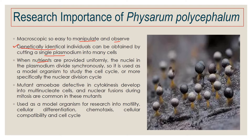As Physarum polycephalum obtains nutrition, it divides repeatedly, and the division rate increases when there is a good amount of nutrition in the media. For this reason, this organism can be used to study the cell cycle as well as the nuclear division cycle. If we want to induce mutations, it is also very good for mutational studies. Apart from that, it can be used as a model organism to study motility and cellular differentiation.